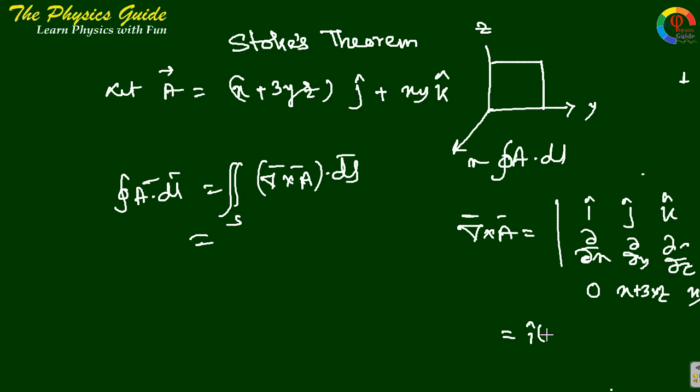And this gives i cap times ax minus 3y plus j cap minus y plus k cap.